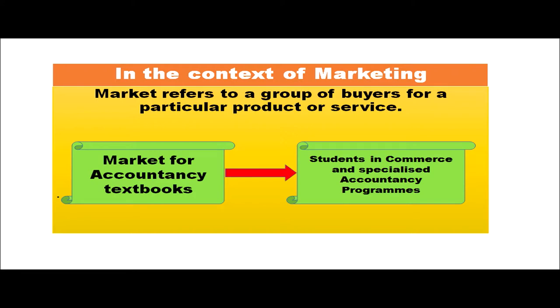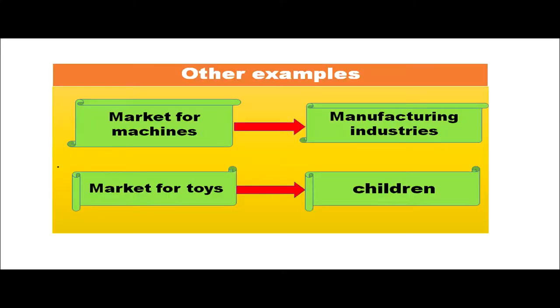For example, the market for accountancy textbooks will be students in commerce and specialized accountancy programs. Market for machines will be manufacturing industries, and market for toys will be children. So in marketing, the word 'market' is used to denote the collective buyers who are interested in the product.